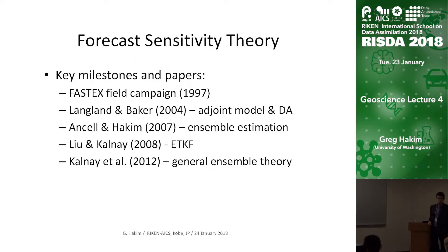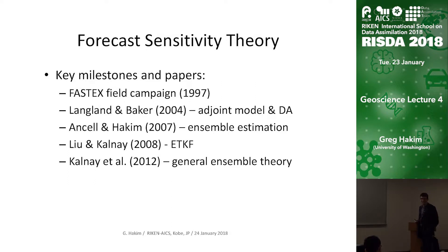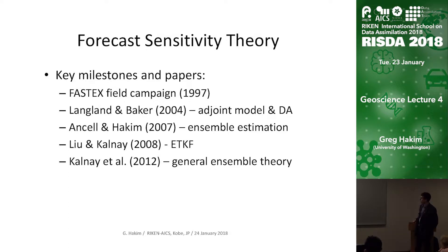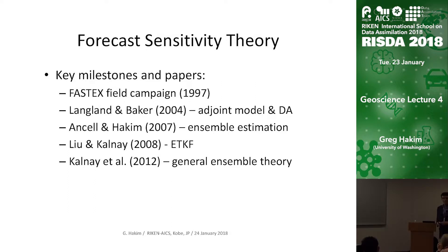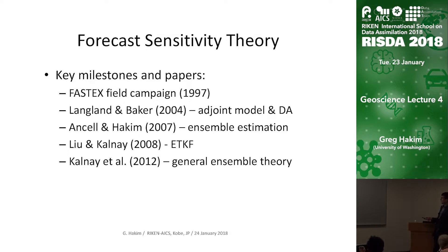I have an allergic reaction to adjoint models. They are easy to write down, but not so easy to implement. It involves transpose operations of numerical models going backwards in time. So we came up with a way, statistically, to get the same thing that the adjoint model provides without needing the adjoint model, and it involves ensemble estimation.